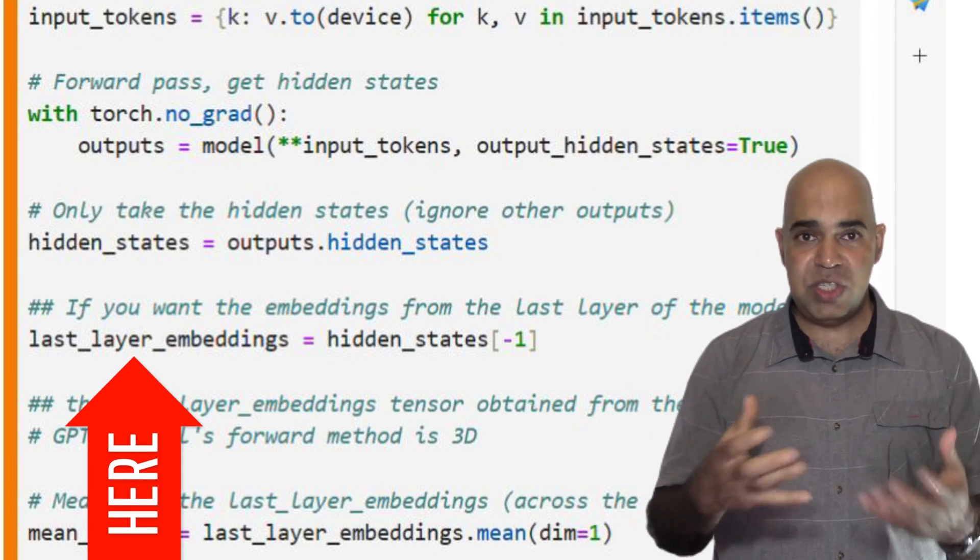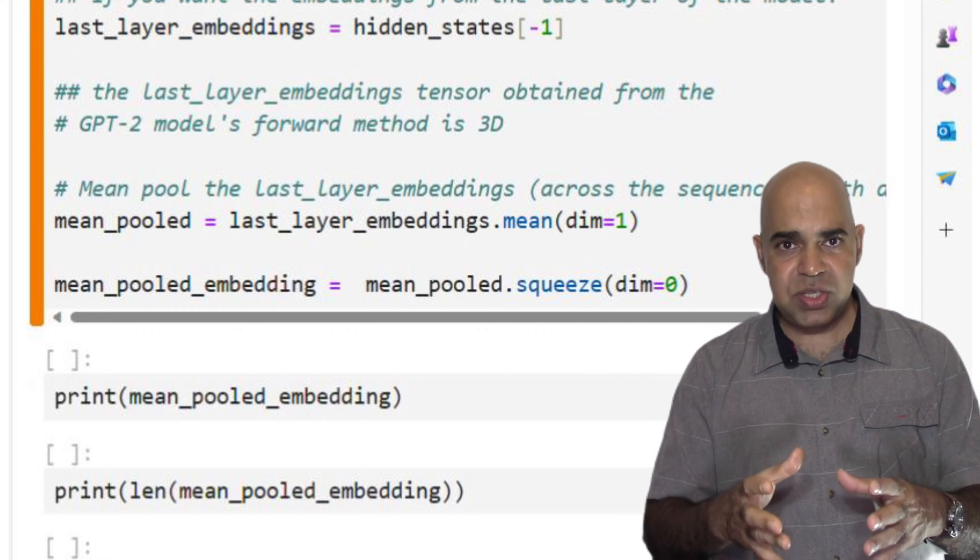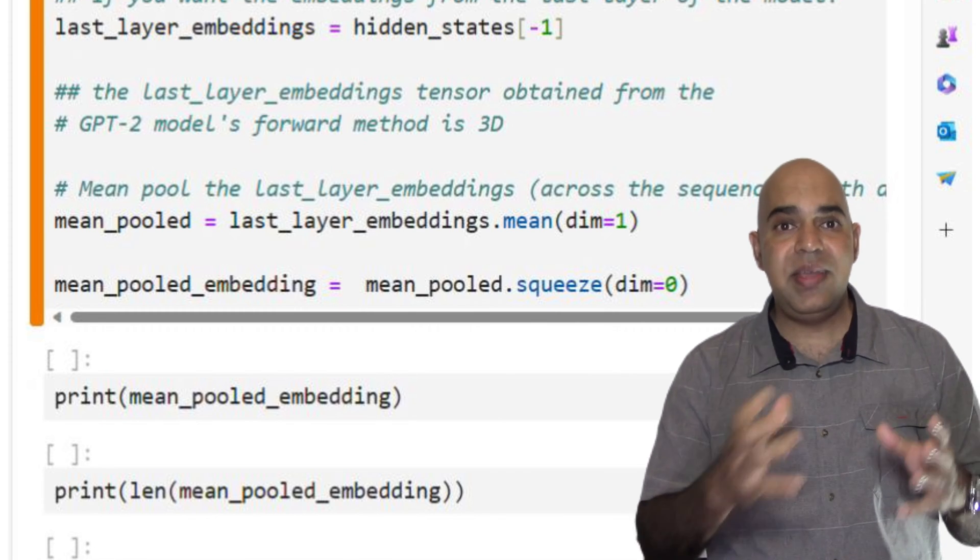The tensor obtained from the GPT-2 model's forward method is three-dimensional, with a shape of batch size, sequence length, and hidden state.